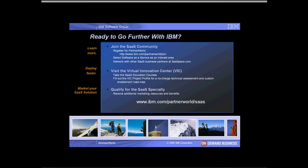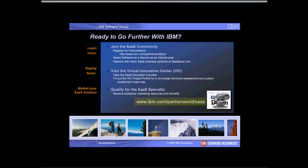IBM has innovative resources and programs to help you manage change and become relevant in the software-as-a-service market. Whether you're an ISV, system integrator, or reseller, we can provide education, support, and benefits to help you grow revenue and differentiate yourself. The first step will be to join the SaaS community, where you will be kept aware of new SaaS technical benefits and workshops to help transform your application for delivery in the IBM software-as-a-service model. As a member of the IBM SaaS community, you can register at the Virtual Innovation Center (VIC), where you will get personalized access to product support and education. As an advanced-level member of Partner World, you have the opportunity to gain additional marketing and sales support by qualifying for the Software-as-a-Service specialty. For more information, visit ibm.com/partnerworld/SaaS.